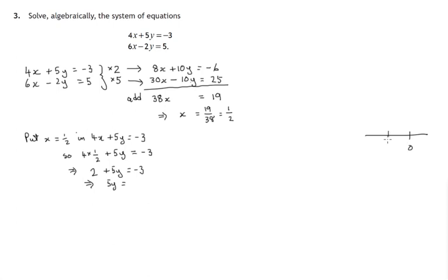5y would be negative 3 minus 2. Think of your number line, negative 3. And we subtract 2, we get negative 5. And divide both sides of this equation by 5. We'll get 1y equals negative 5 divided by 5, which is negative 1.